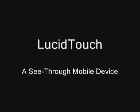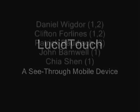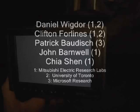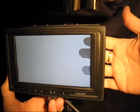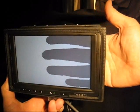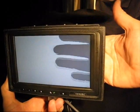In this video, we present the LucidTouch, a see-through mobile device. See-through mobile devices allow users to see their hands while working behind the display. In what we have termed pseudo-transparency, the hands are shown, but other objects behind the device are not.